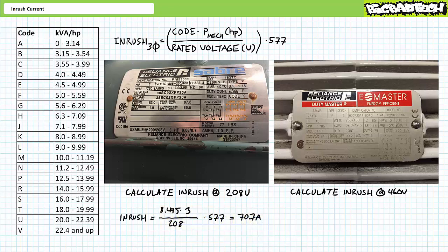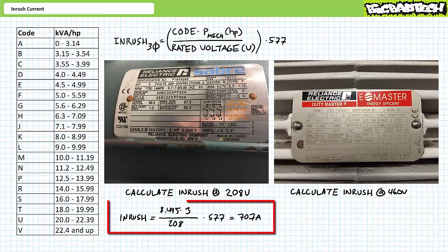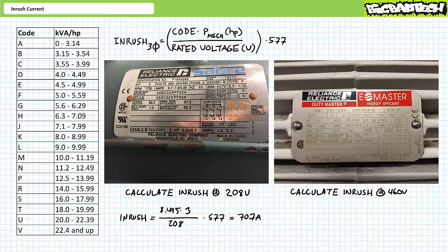The first example features a three-horsepower motor intended to operate using 208-volt three-phase AC in the low-voltage configuration with a locked rotor code of K, meaning it has a kilovolt ampere per horsepower constant with a low of 8 up to a high of around 9. Center of mass is around 8.5. Substituting this value, the power rating, and the rated voltage into the inrush equation results in an estimate of roughly 70.7 amps — roughly 8.1 times the rated current of 8.7 amps in the low-voltage configuration.